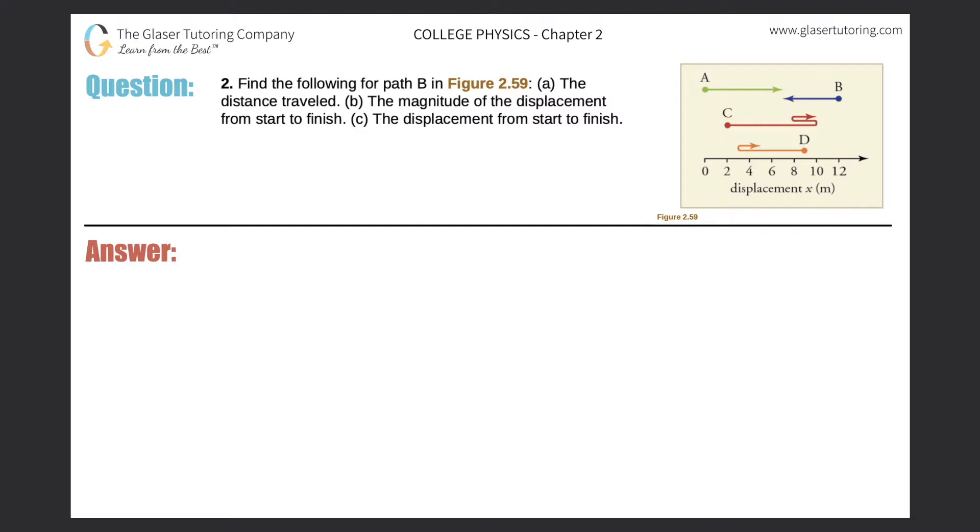Number two. Find the following for path B in figure 2.59. Letter A: The distance traveled. Let's take a look at path B here on the right-hand side. It's there in a bluish purple. So we have to find the distance traveled.